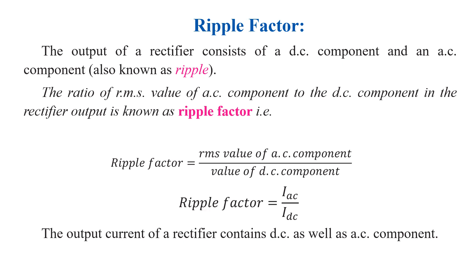We have discussed about rectifiers in the previous video, which are capable of converting alternating current into DC current. But basically, rectifiers without a filter cannot convert the entire AC into DC, so there will be some component of AC in the output as well — the output will not contain pure DC.